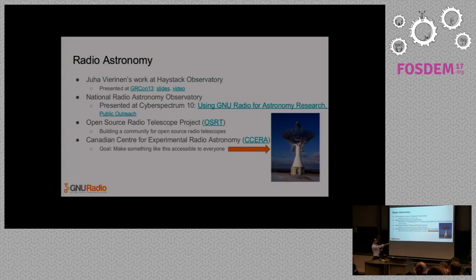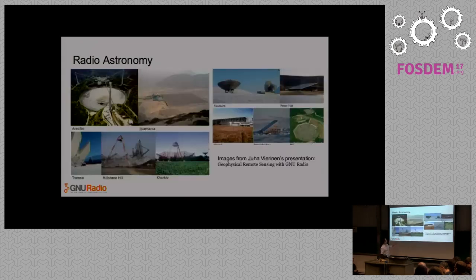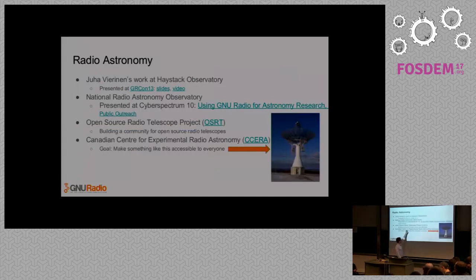More recently, the NRAO — the National Radio Astronomy Observatory in the United States — started integrating GNU Radio into not only their own work but their curriculum. There's now a separate project called the Open Source Radio Telescope Project, and their goal is to create a community for people who want to build their own radio astronomy telescopes at home cheaply. You don't need something like an Arecibo dish to receive radio waves from other galaxies and study them — you can actually do it relatively cheaply at home. If you go to the website you'll notice it's still somewhat under construction. The idea is to post designs, schematics, tips, and GNU Radio flow graphs to help you get into this.